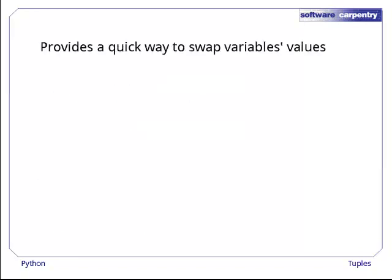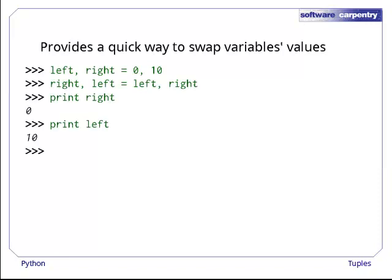Multiple-valued assignment is also a quick way to swap variables' values. Let's initialize left and right to 0 and 10 respectively, and then assign left and right to right and left. Sure enough, when we're done, Python has swapped their values.